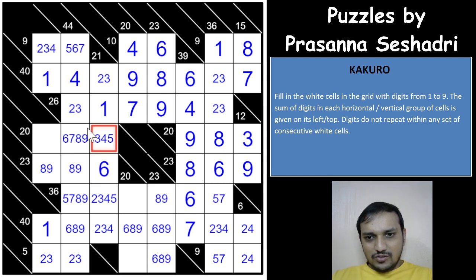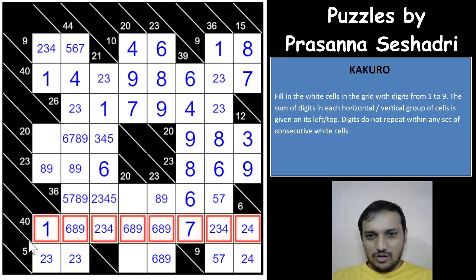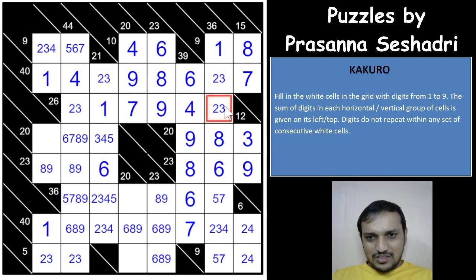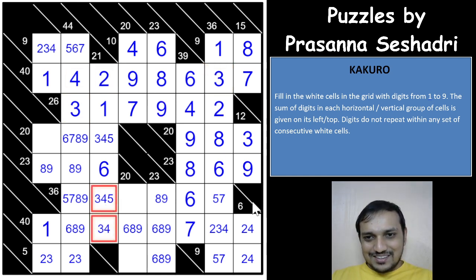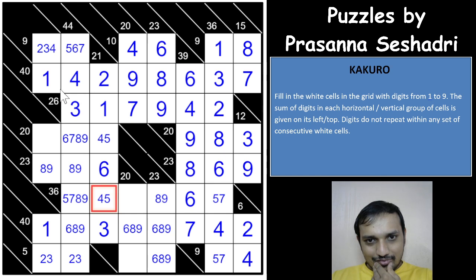There's an X-wing of 3 here — 3 can only be in these two cells in one column, and only in these two cells in the other column. This means this cell cannot be 3, so it must be 2. I never expected an X-wing here, but it works. 2 and 3 give 4 here, then 3 yields 2 and 3 in adjacent cells.